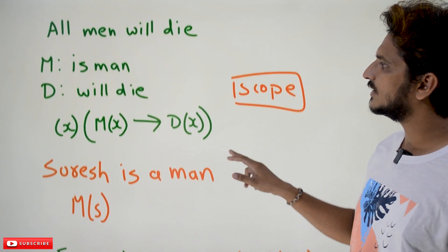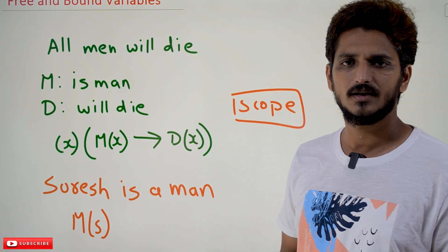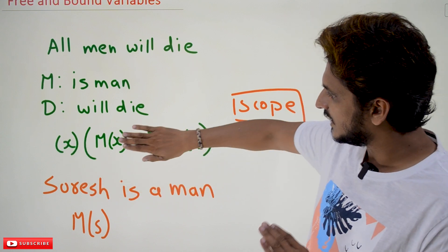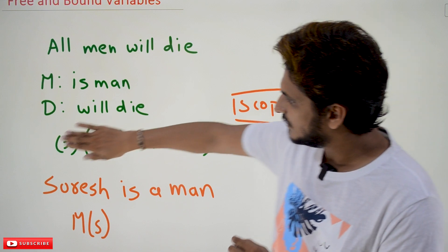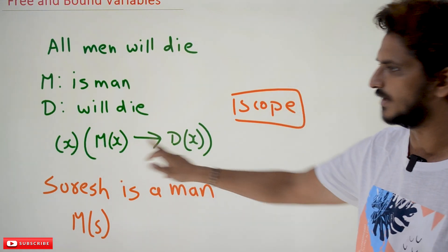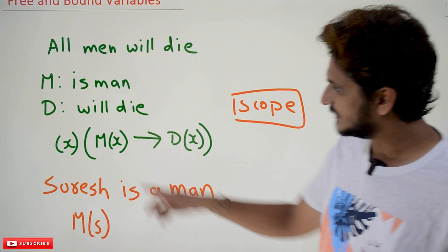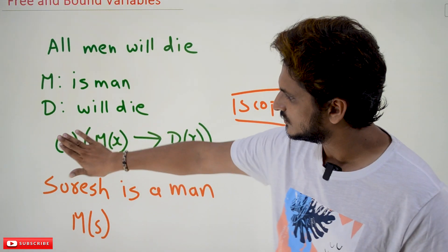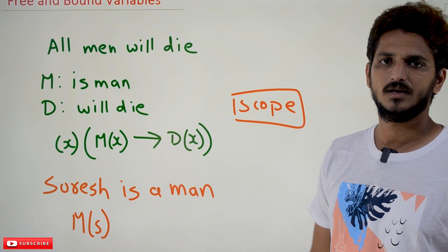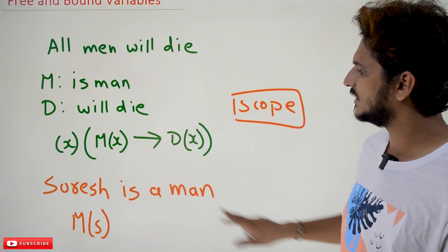One more important point to understand: what is the scope of variable x in the quantifier 'for all x'? The scope of the variable is whatever the statement follows it — this quantifier has been mentioned before the statement. So the scope of this quantifier belongs to this entire statement. You need to observe the brackets carefully. The quantifier is applied to this entire equation — that is the scope of the quantifier.